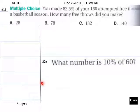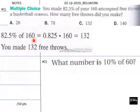Okay, welcome back. 82.5% of 160 would be 0.825 times 160 equals 132. So you made 132 free throws.